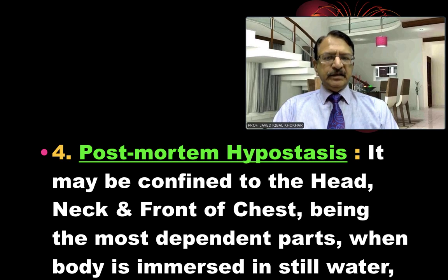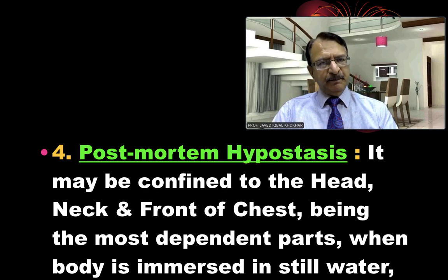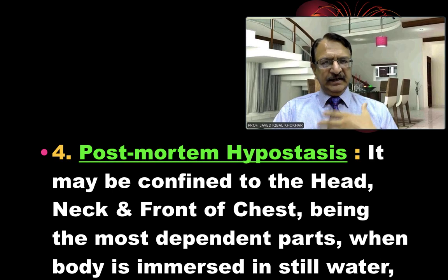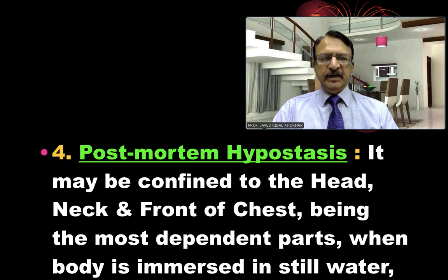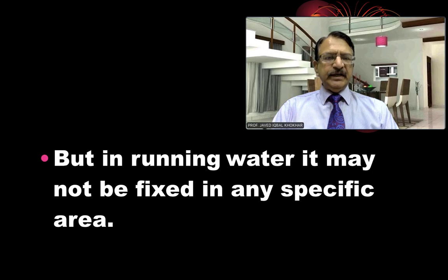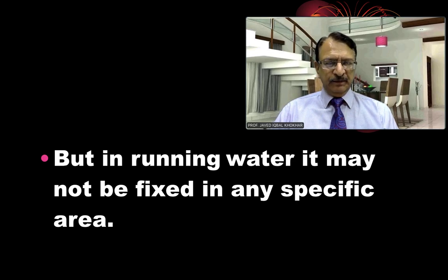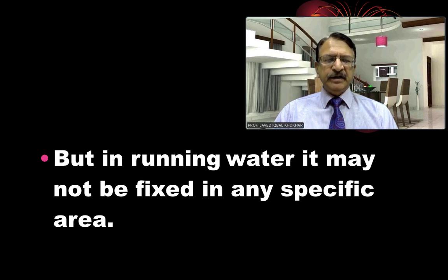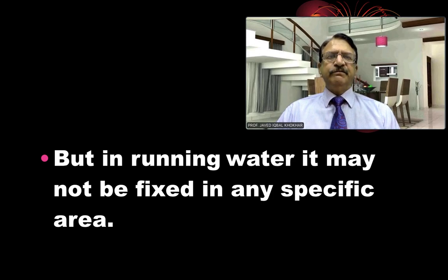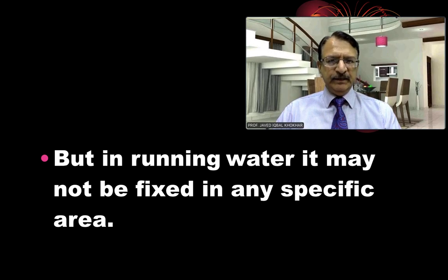Regarding post-mortem hypostasis, this may be limited to the dependent areas because when the body is floating in water, the head, chest, and neck are the dependent parts, and in those areas the post-mortem staining will be found. But in running water, there will be no specific area where post-mortem staining develops, because the body is constantly rolling, changing its position, and the time does not permit the staining to develop and fix. So in running water, post-mortem staining will not be seen in an independent area.